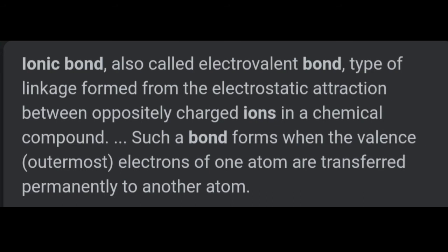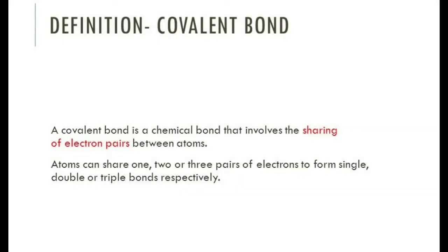The chemical bond formed by the sharing of electrons between two atoms is known as a covalent bond. Covalent bonds involve sharing of electrons, while ionic bonds involve the transfer of electrons from one atom to another.